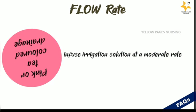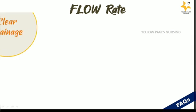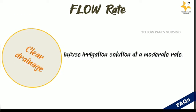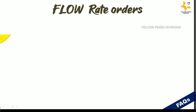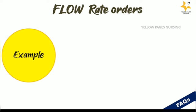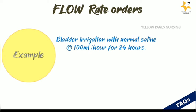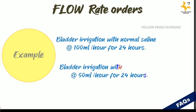Some examples of irrigation orders include: bladder irrigation with normal saline at 100 ml per hour for 24 hours, or bladder irrigation with normal saline at 50 ml per hour for 24 hours.